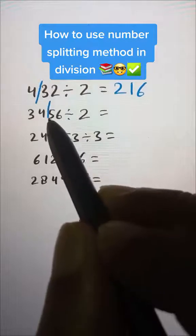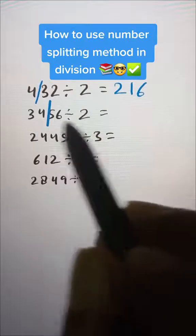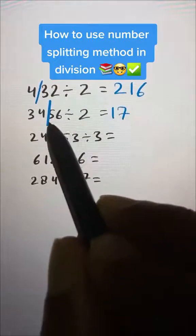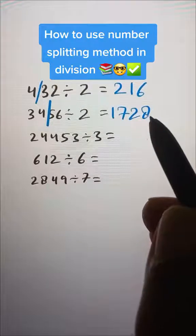Here we can split at this place. Half of 34 is 17 and half of 56 is 28, giving us 1728.